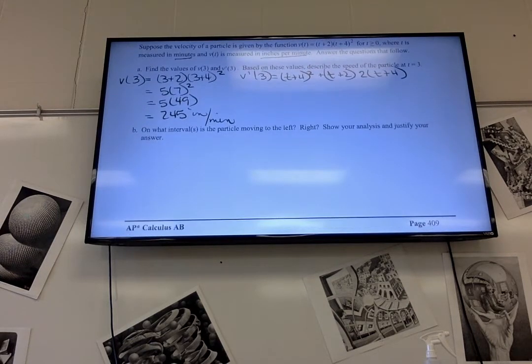And then show your analysis and justify your answer. So, here's the equation. This is the V of T. Did we finish A yet? We didn't finish A yet. Oh, we didn't? Oh, thank you. Let me go back to A. So, on A, we had just found V of 3. Should we have played that in? And we are about to find V prime of 3.